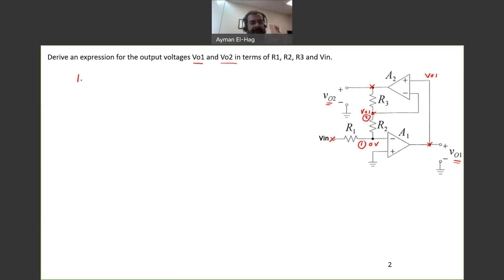So apply KCL at node number 1. In this node, we assume the currents are leaving. So this is to the left, to the right, and the current that goes through the op-amp here, I, is equal to 0. So we have only two currents.